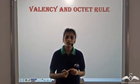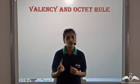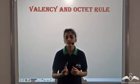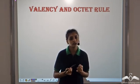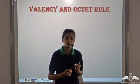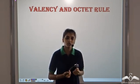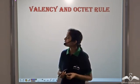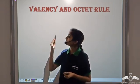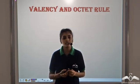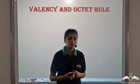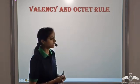So far we have seen some important properties related to atoms like their electronic configuration, atomic number, mass number etc. We will now see some other important properties like valency and octet rule. Let's see what they are.